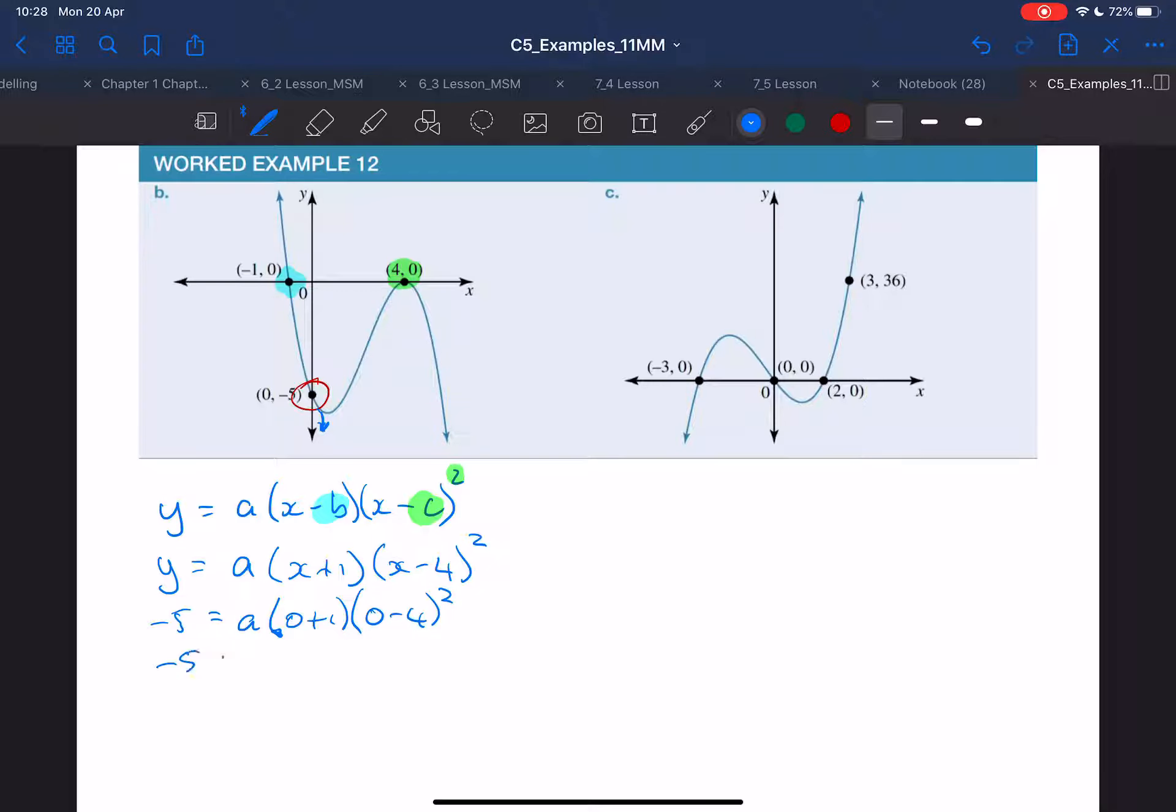So this is minus 5 equals a, 0 plus 1 is 1, and negative 4 squared is 16. So a equals 16 over negative 5, or divide by, sorry, divide by 16 on both sides. Let's just delete that. It's going to give me negative 5 over 16.